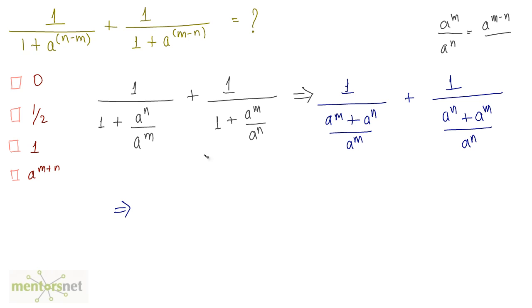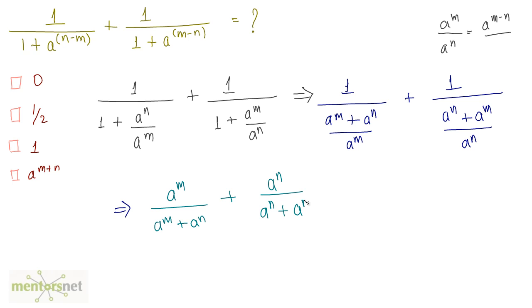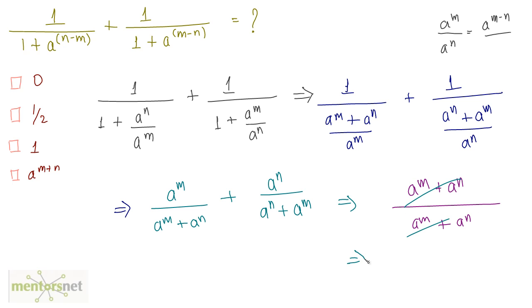This is equivalent to: a raised to power m goes up, and a raised to power n goes up. So we get a raised to power m upon a raised to power m plus a raised to power n, plus a raised to power n upon a raised to power n plus a raised to power m. The denominators are the same, so this becomes a raised to power m plus a raised to power n in the denominator, and a raised to power m plus a raised to power n in the numerator. They cancel out, so what remains is 1. The answer is option C.